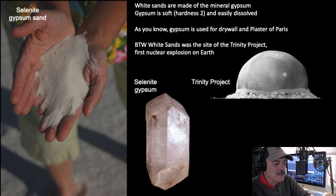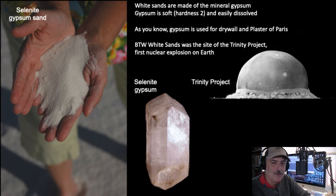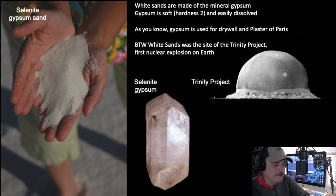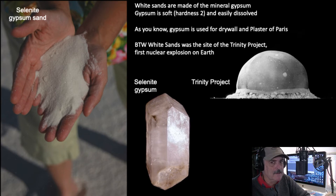White Sands is made out of the mineral gypsum. It actually grew in a nearby lake, and every once in a while winds whip up and blow the crystals downwind, accumulating at White Sands National Monument. It's an evaporite deposit that became windblown sand grains — quite a unique setting.